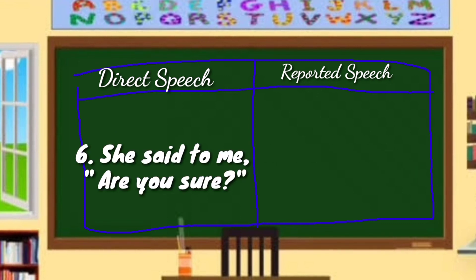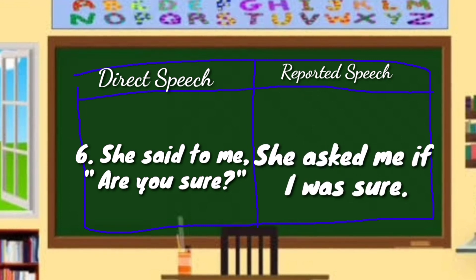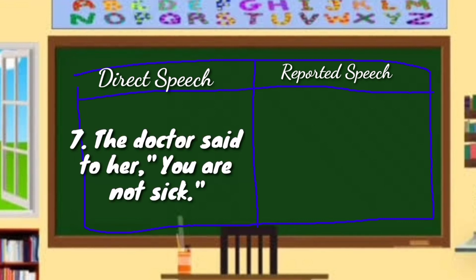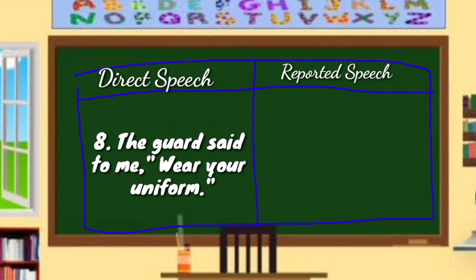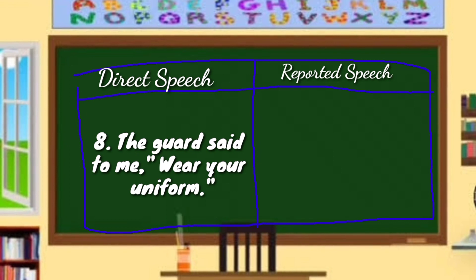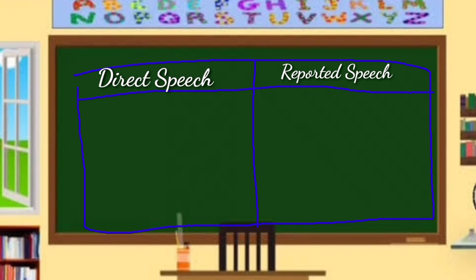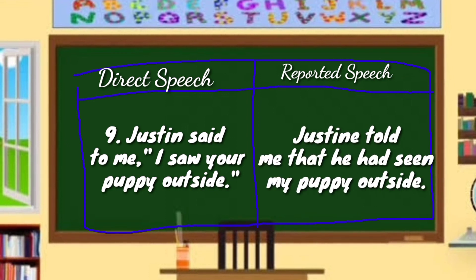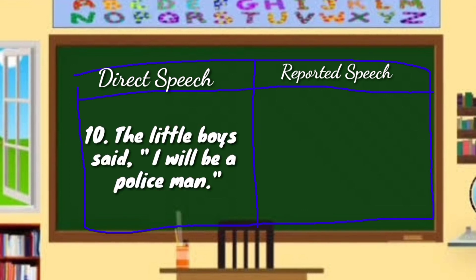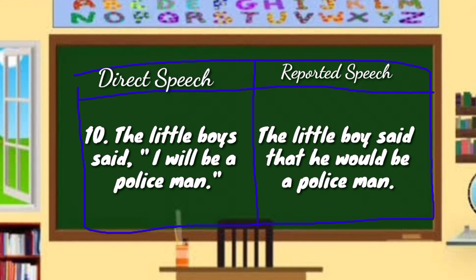Number 6: She said to me, 'Are you sure?' Answer: She asked me if I was sure. Number 7: The doctor said to her, 'You are not sick.' Answer: The doctor told her that she was not sick. Number 8: The guard said to me, 'Wear your uniform.' Answer: The guard told me to wear my uniform. Number 9: Justin said to me, 'I saw your puppy outside.' Answer: Justin told me that he had seen my puppy. Number 10: The little boy said, 'I will be a policeman.' Answer: The little boy said that he would be a policeman.